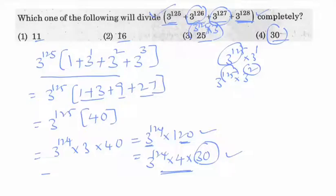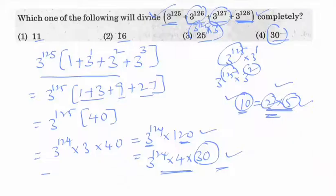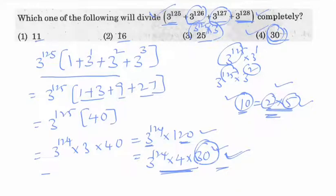It is easy. Factorization — for example, 10 is equal to 2 into 5. That means the factors 2 and 5 exactly divide 10. Therefore every factor divides that number exactly. The same thing applies here. So the answer is 30.